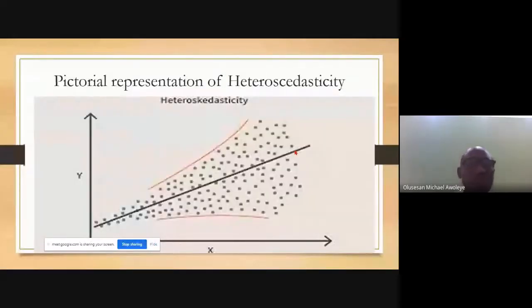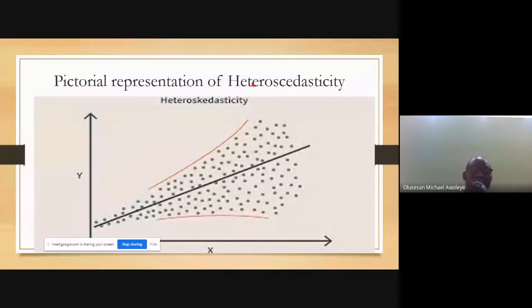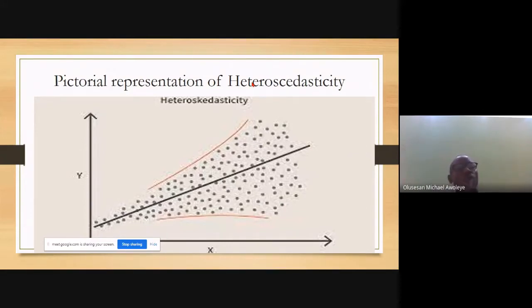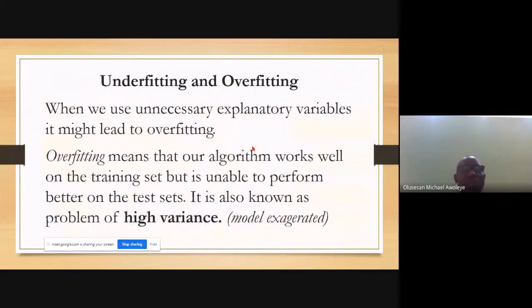When you have inconsistency among the errors generated, it shows there is heteroscedasticity in your dataset. You are not going to stop there — you have to fix it. We will still discuss how to fix it later.